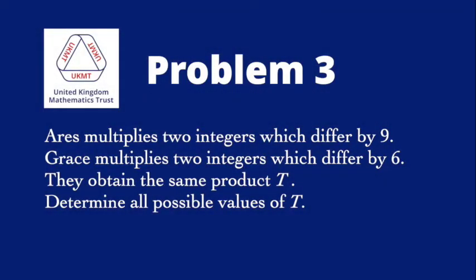Problem 3: Aries multiplies two integers which differ by 9. Grace multiplies two integers which differ by 6. They obtain the same product, t. Determine all possible values of t.